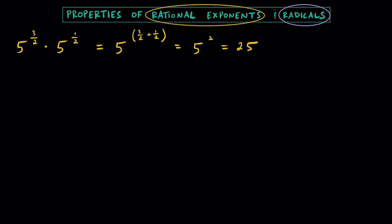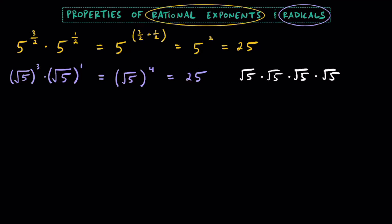If you were trying to think about this problem in radical form, this is the same thing as the square root of 5, because that's to the 1 half power, raised to the 3rd power, times the square root of 5. Keep in mind that this square root of 5 is really square root of 5 raised to the 1st power, so because we have the same basis here, we can say that this is going to be the square root of 5 raised to the 3 plus 1 power, or raised to the 4th power. And because the square root of 5 raised to the 2nd power is just 5, that means that the square root of 5 raised to the 4th power is going to equal 25.